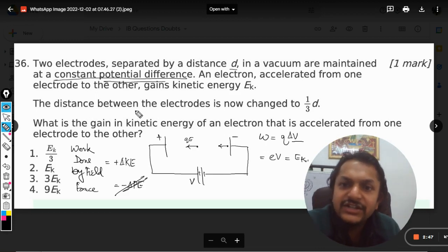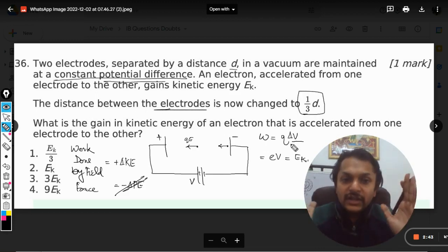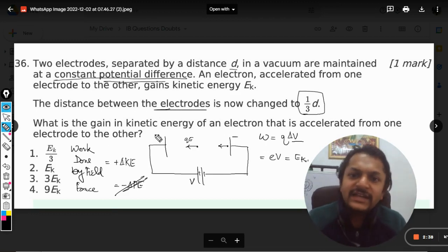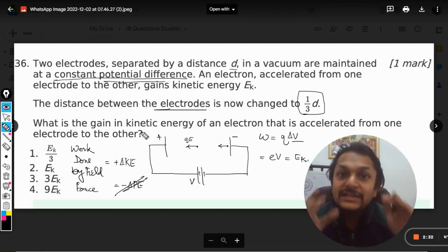Now what is happening to the second case? The distance between the electrodes is now changed to d by 3. The electrodes have been brought together to a distance of d by 3. What is the gain in kinetic energy of electron that is accelerated from one electrode to the another in the second case?